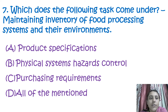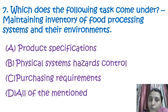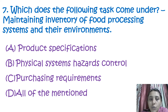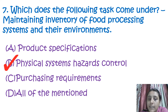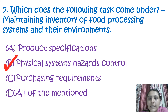The next question is: which of the following tasks comes under maintaining inventory of food processing systems and their environments? The answer is physical system hazard control — these are the basic tasks that come under food processing industries.